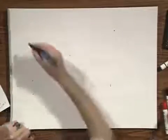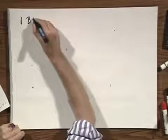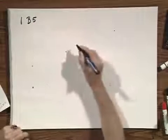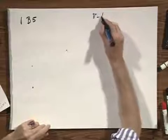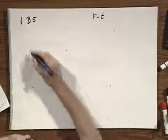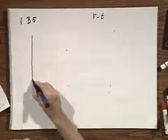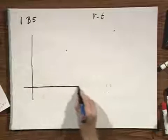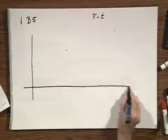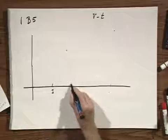We're going to problem 1B5. 1B5 is a little tricky. It is a velocity-time diagram, and I will first try to make the plot somewhat similar to what you have in your book.